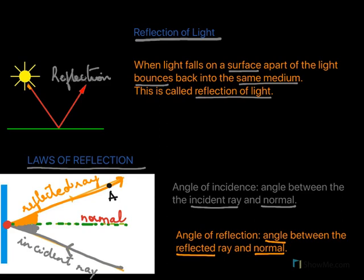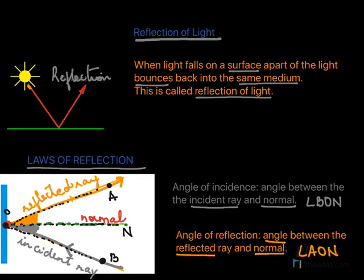In the diagram, with points A, O, B, and N marked, the angle B-O-N is the angle of incidence and the angle A-O-N is the angle of reflection. So we have learned what the reflected ray, incident ray, normal, angle of incidence, and angle of reflection are.